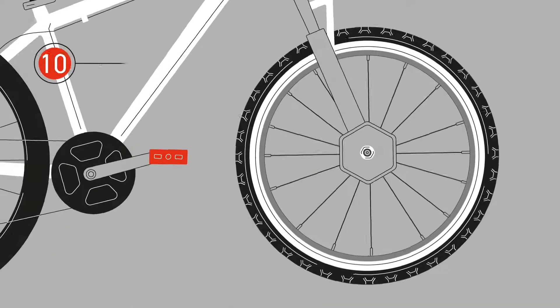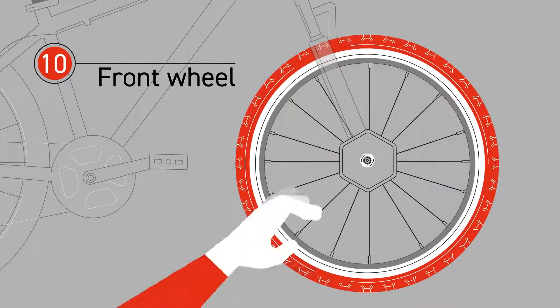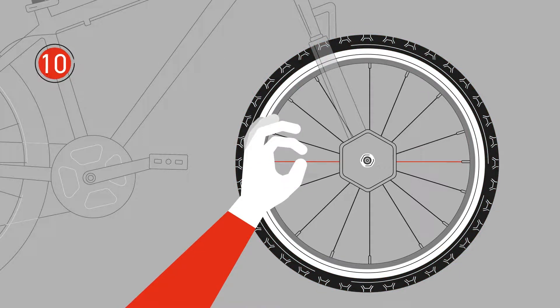Finally, you need to check your front wheel. Like your back wheel, it should be fitted securely and spin smoothly with no loose spokes. Check your tires and brake too.